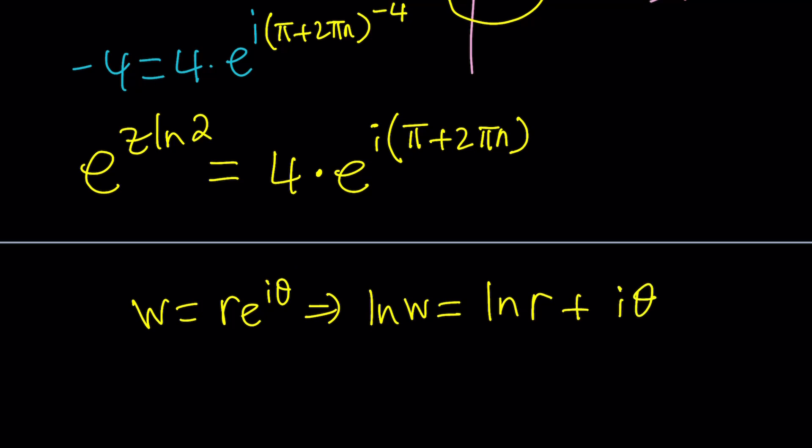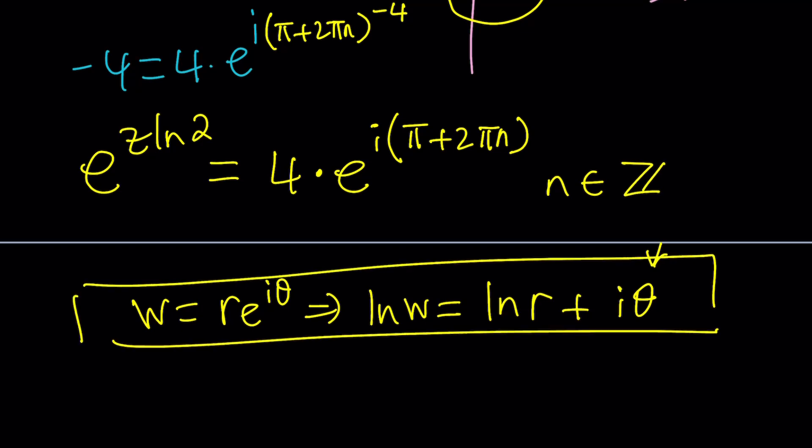Of course when I say theta I could be talking about the principal value which is pi in this case or just all the values. There are infinitely many of them because n is an integer. So far so good. Okay that's just the general formula for the log of a complex number and let's take it from here.